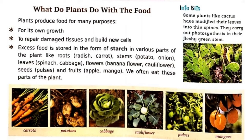Now we discuss what plants do with the food. Plants produce food for many purposes. First, for their own growth. Second, to repair damaged tissues and build new cells. Excess food is stored in the form of starch in various parts of the plant: roots like radish and carrot; stem like potato and onion; leaves like spinach and cabbage; flowers like banana flower and cauliflower; and seeds, pulses, and fruits like apple and mango. We often eat these parts of the plant, all of which contain starch.